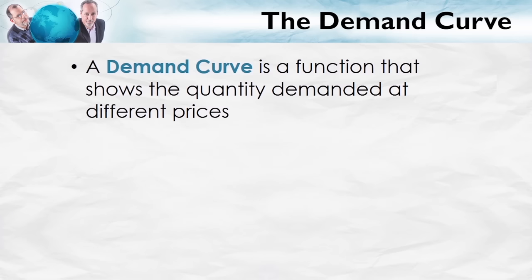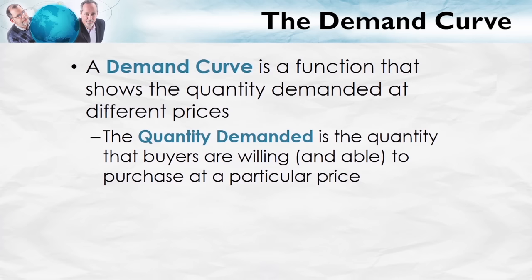Here's a definition. A demand curve is a function that shows the quantity demanded at different prices. By quantity demanded, we mean the quantity that buyers are willing and able to purchase at a particular price. That's a little bit mysterious, so let's give an example of a market and then show the demand curve in that market.